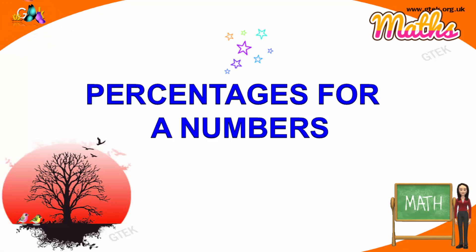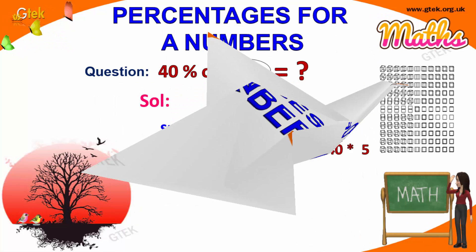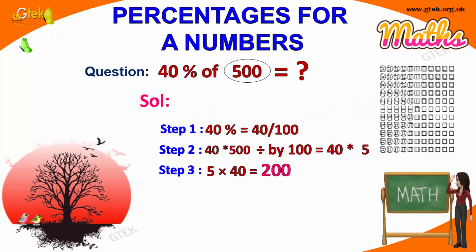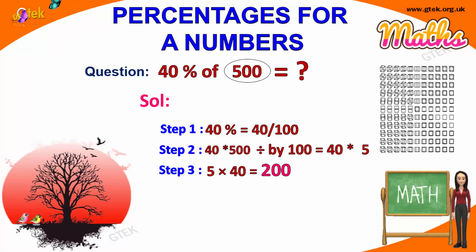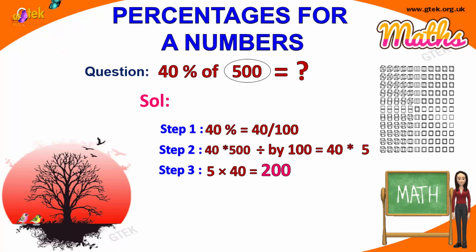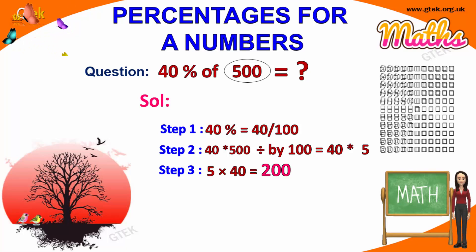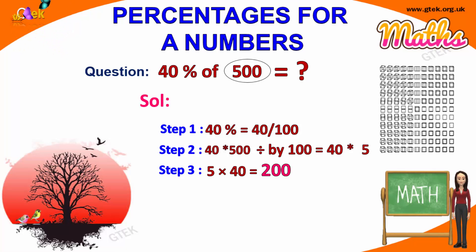Welcome to GDA Company. Now we are going to talk about percentage for your numbers. Let's see 40% of 500. So 40% means what you have to do is 40 divided by 100, which will give 40% of your value into 500.